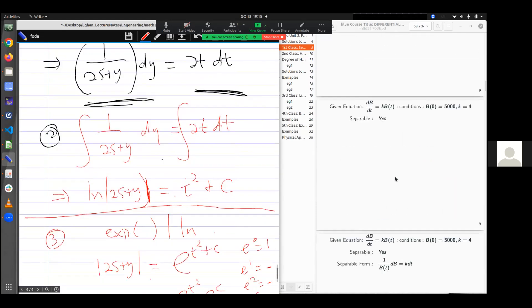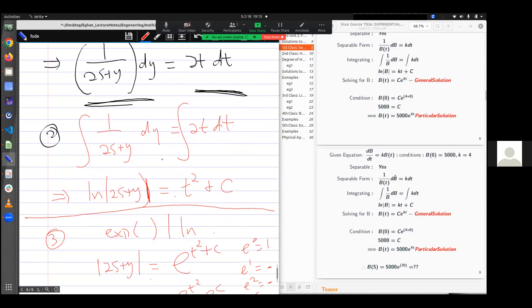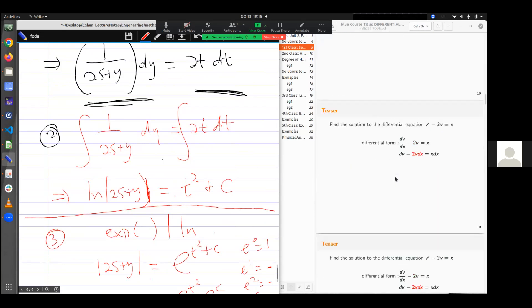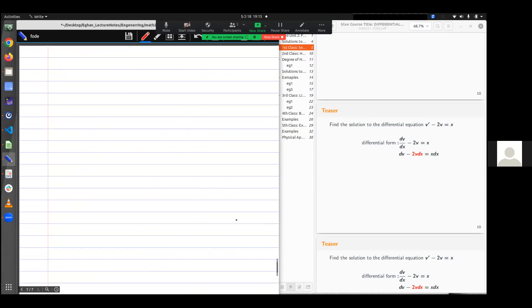Example 2. It says find the solution for the differential equation given. I have the equation as v' - 2v = x. It means I'm looking at a way to solve or write the terms as v only and then x only. Can I do that?